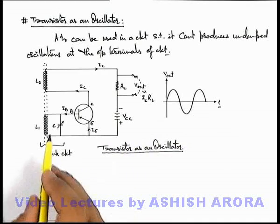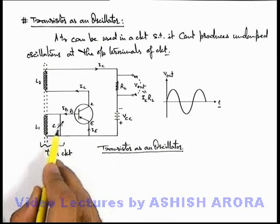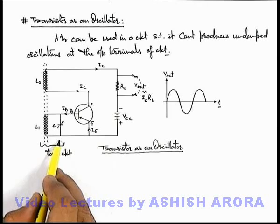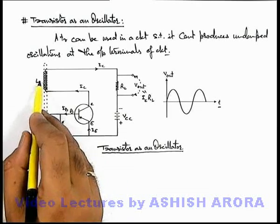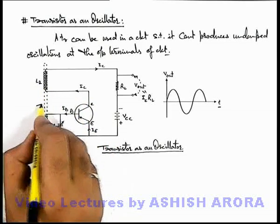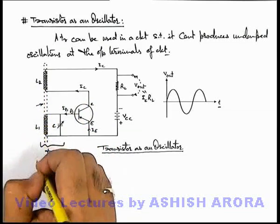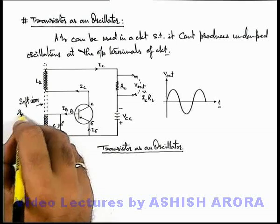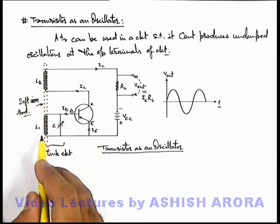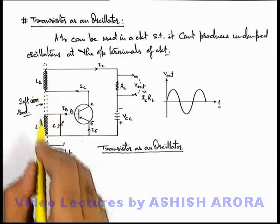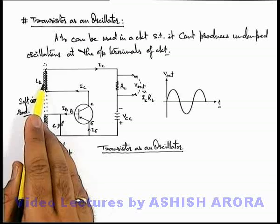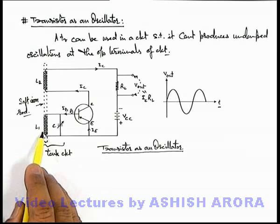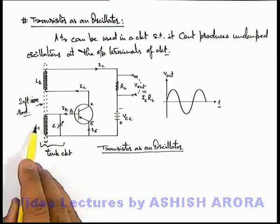For continuous oscillations in the tank circuit, some energy is required. There is no battery or DC source applied on the input side, but for this purpose we connect an inductor L2 in the collector circuit and connect it mutually with inductor L1 through a soft iron rod. This soft iron rod links the flux of inductor L2 to inductor L1. So due to mutual induction between L2 and L1, a part of energy in the collector circuit is linked to the base side, and the oscillations in the tank circuit will continuously sustain.